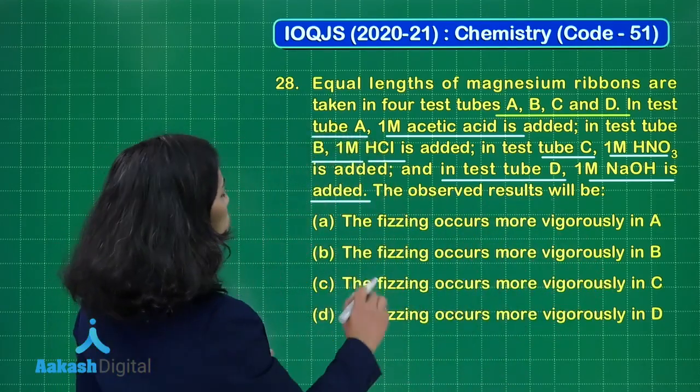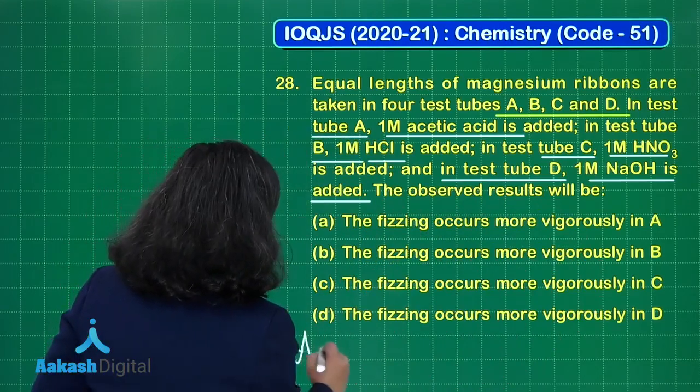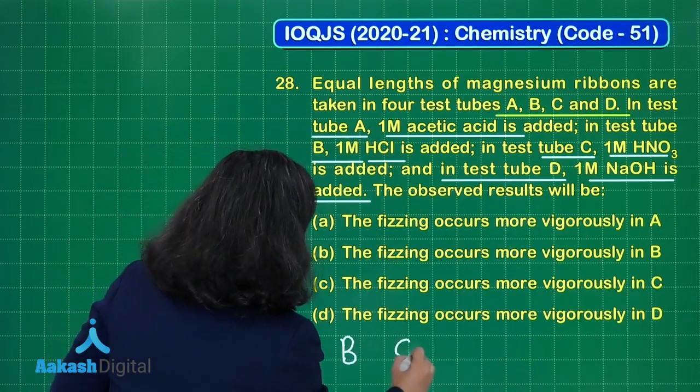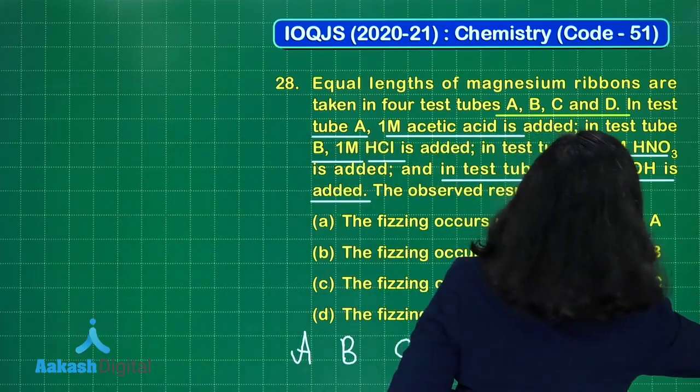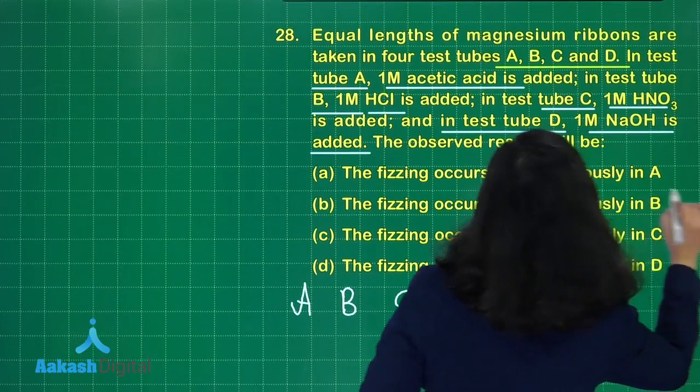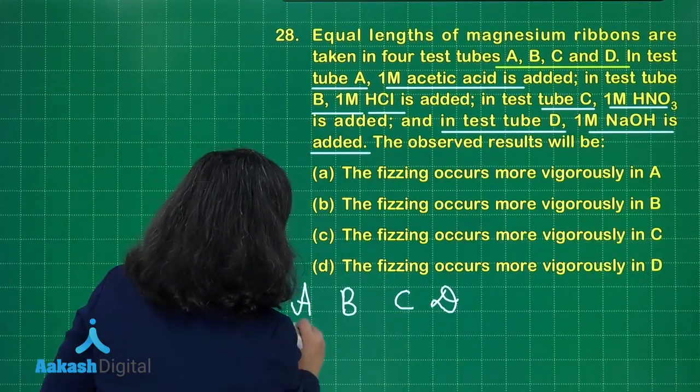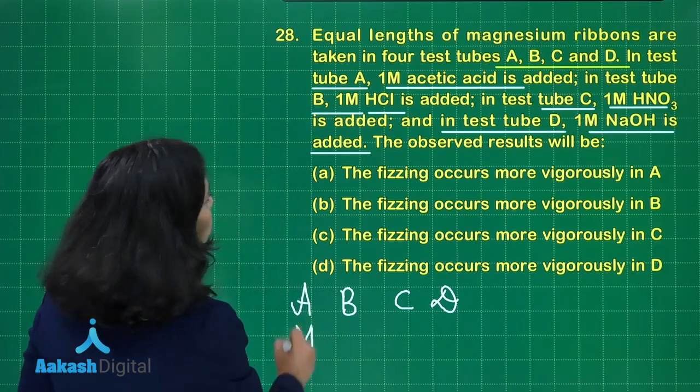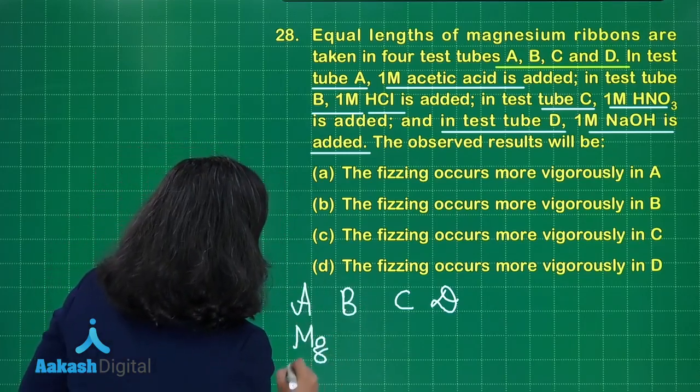So first of all you have to just look at the four test tubes. I am just writing A, B, C and D. These are the test tubes, and in these test tubes equal lengths of magnesium ribbons are taken. So here is also magnesium, and it is going to react with acetic acid.